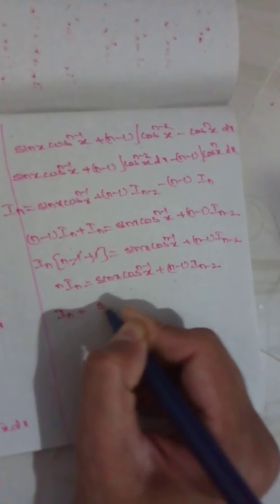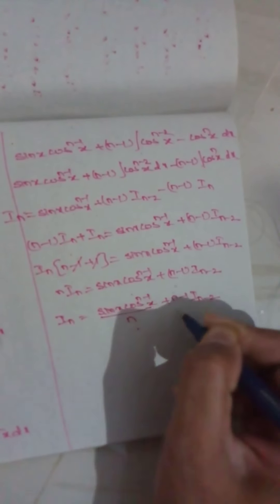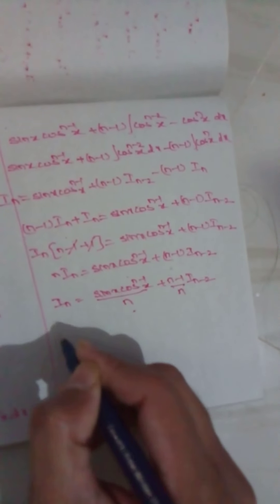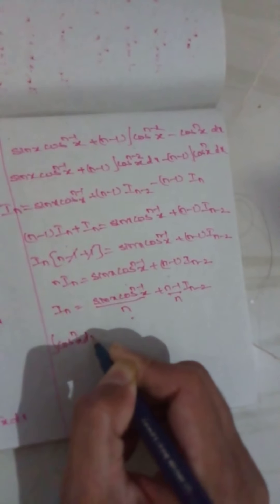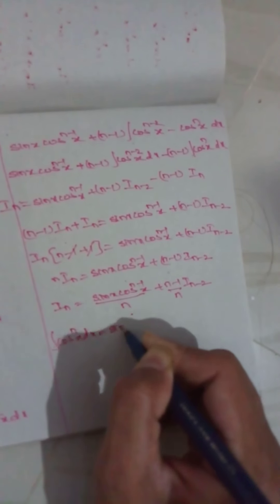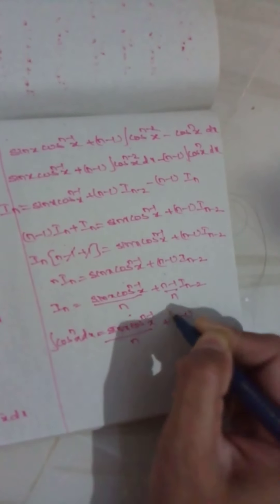Therefore, Iₙ = [sin x · cos^(n-1)x] / n + [(n-1)/n] · Iₙ₋₂. Therefore, the integral of cosⁿx dx = [sin x · cos^(n-1)x] / n + [(n-1)/n] · Iₙ₋₂.